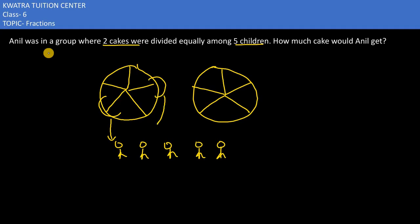2 parts of the 1st cake would go to the 2nd person. 2 parts of the 1st and the 2nd cake would go to the 3rd person. 2 parts of this would go to the 4th person. And 2 parts of the 2nd cake would go to the 5th person. So I can understand how many parts one student would get: 2 by 5. So we can understand that Anil would be getting 2 by 5.